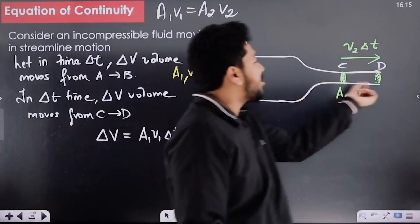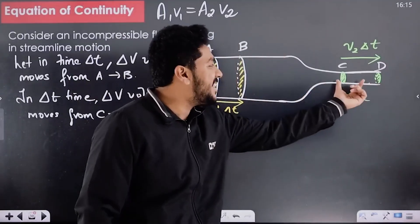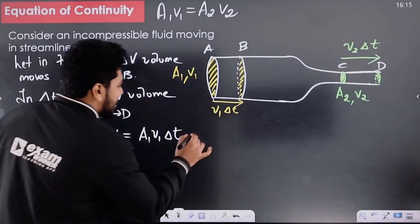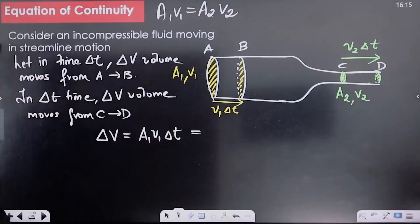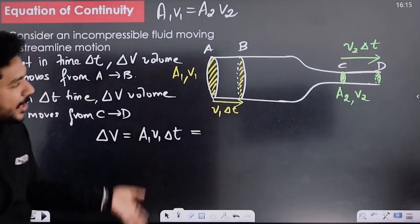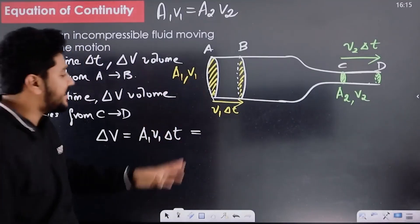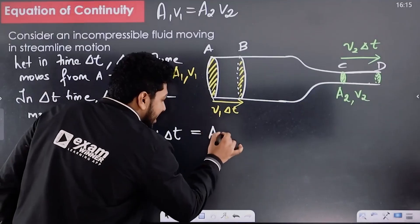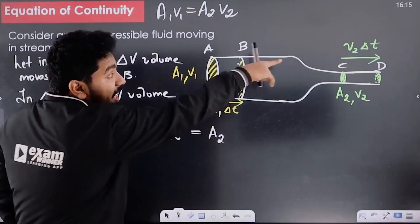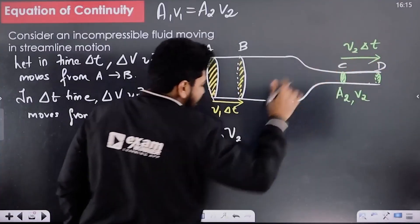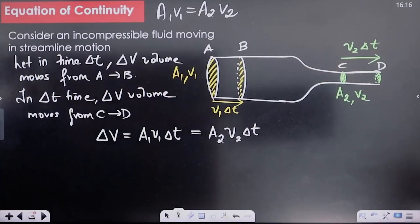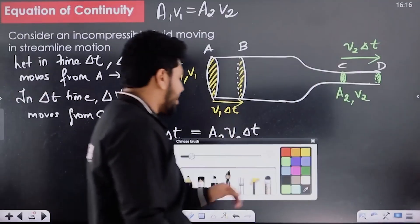If you want the volume of delta-v, the volume of the cylinder is delta-v. The volume of cylinder CD: the base area is A2, and the height or length is V2 delta-t. So V2 delta-t is the height. The volumes are the same.